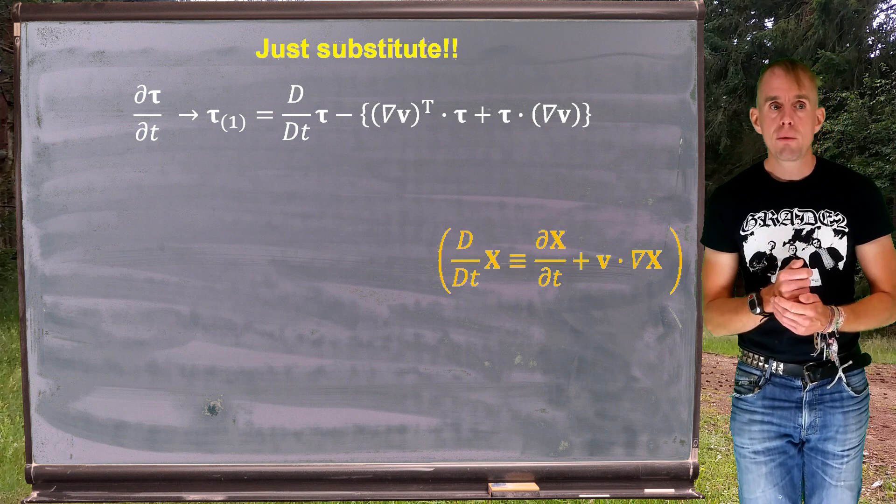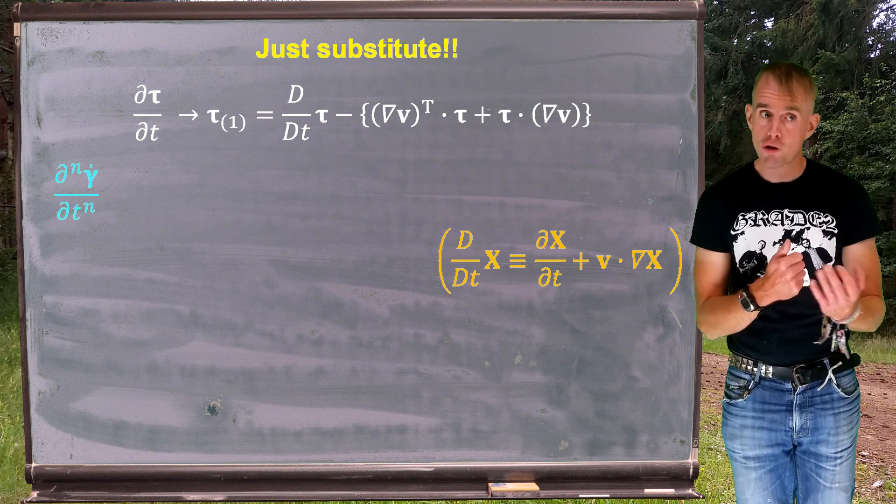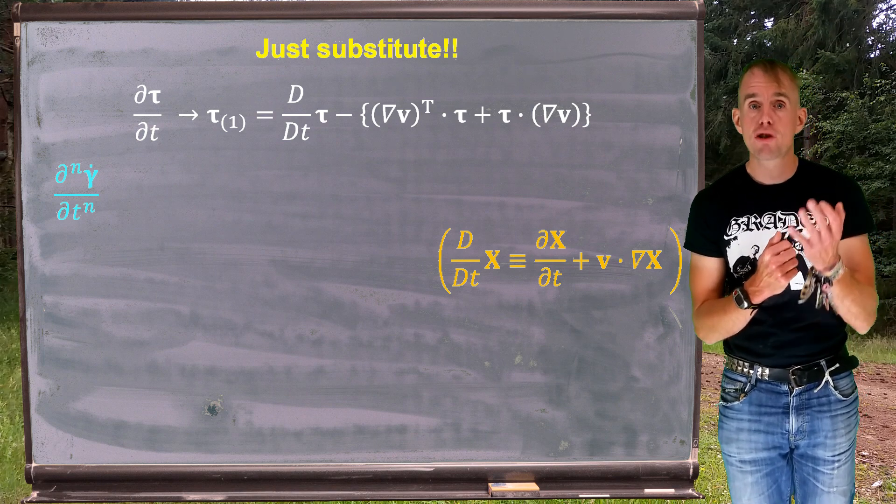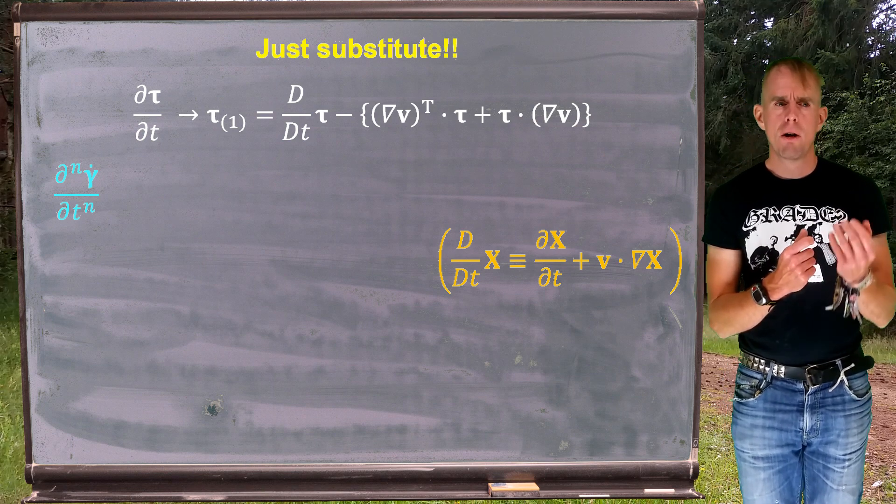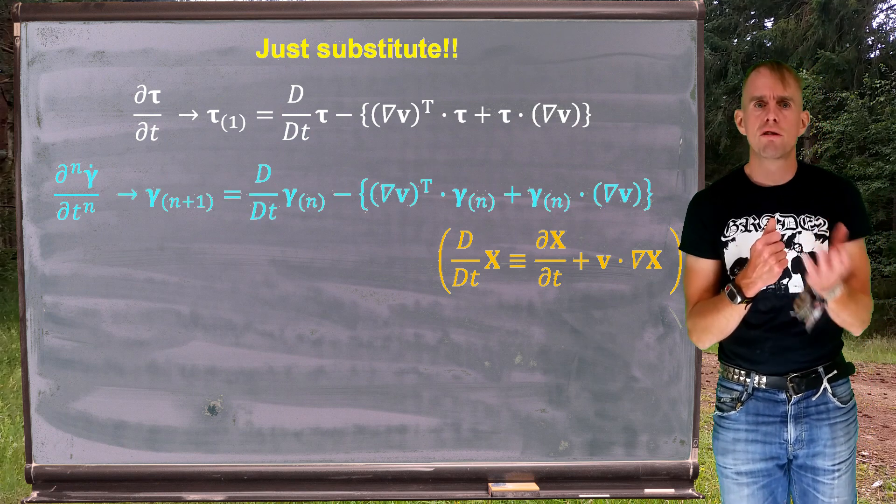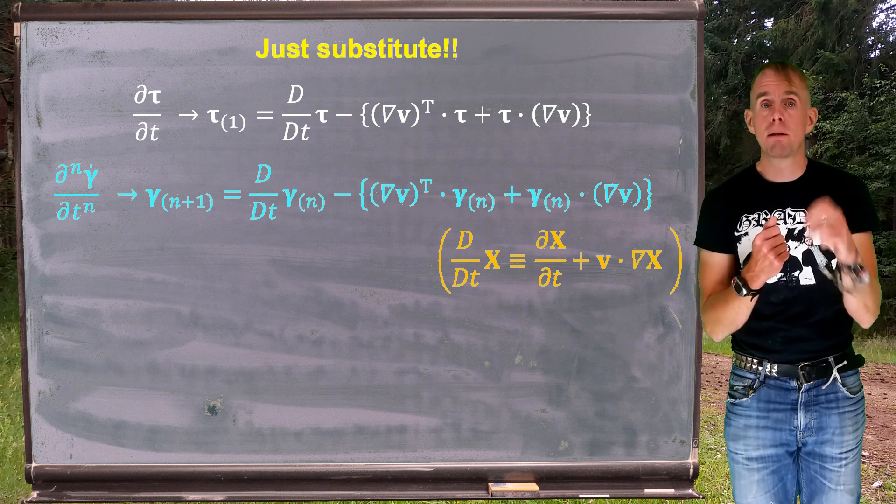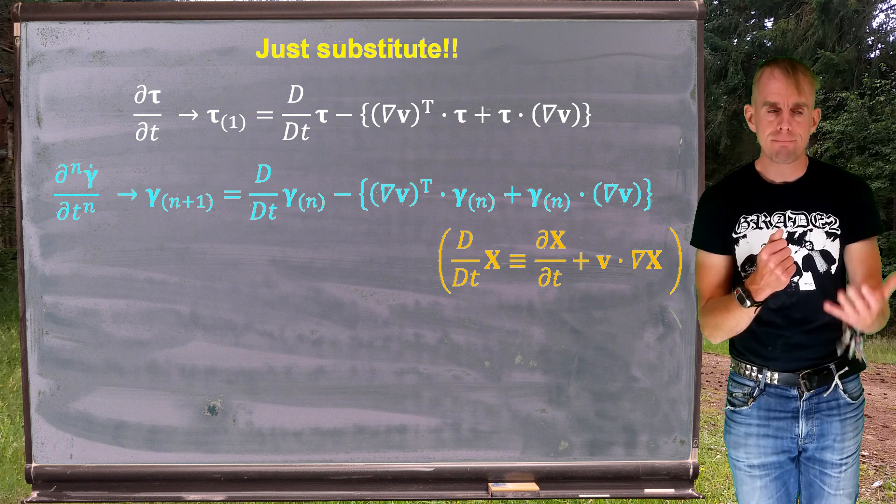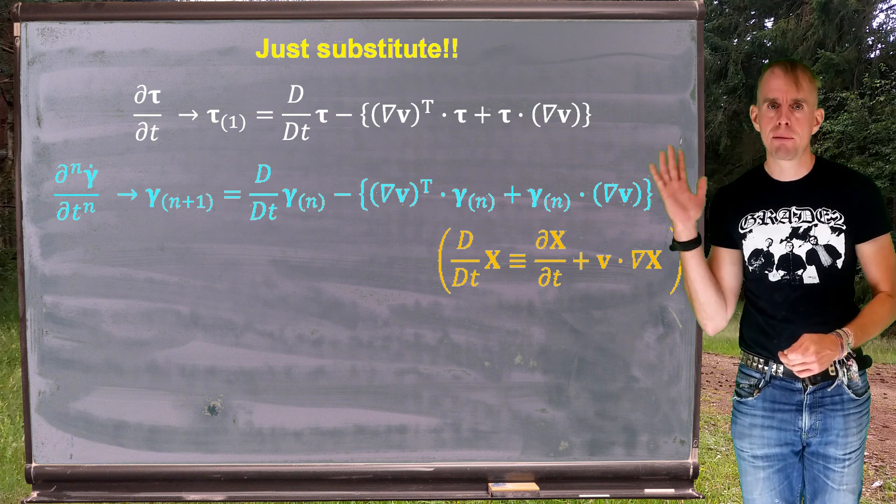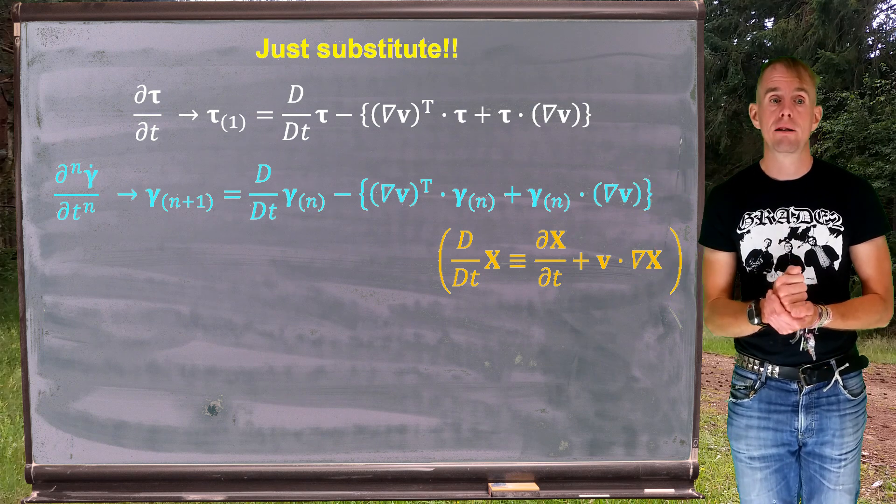Another substitution we can make is for strain rate or for strain. Imagine for an instant, if you will, that we have the nth partial derivative of strain rate with respect to time. We know that the derivative of strain rate with respect to time is simply the next higher order derivative of strain. So the nth partial derivative of strain rate will be the n plus 1th derivative of strain. And the derivative of strain when written in upper convected coordinates is there written on the board.